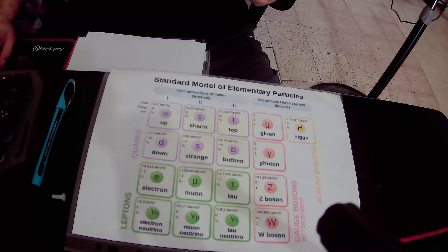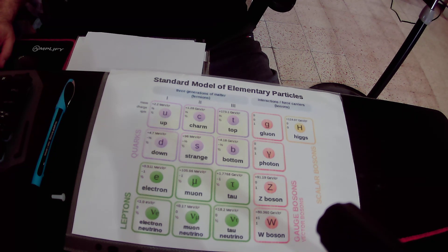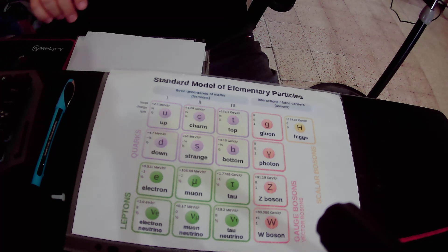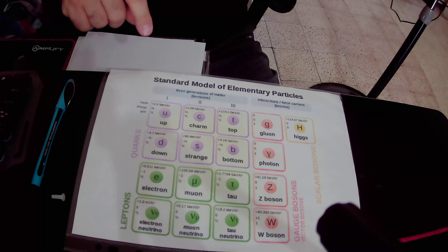Hello, in this short video I will talk about the most fundamental structure of matter. The matter consists of 17 elementary particles, as you can see in the picture. And every elementary particle has its own antiparticle, so in total we have 17 elementary particles and 17 elementary antiparticles.